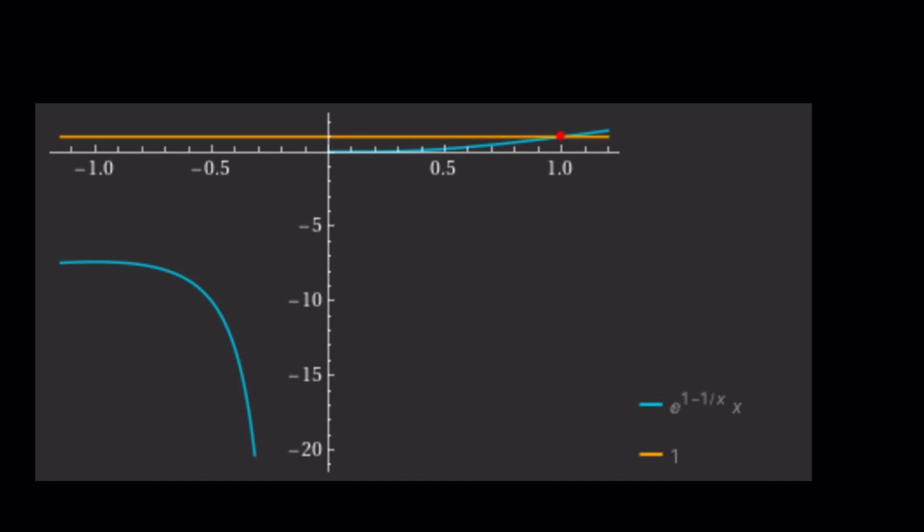First of all, I included the graph of this function. And you can see that, nice, they intersect at x equals 1. Therefore, x equals 1 is a solution. But is that the only solution? Yes.